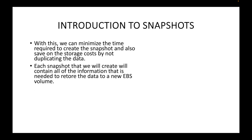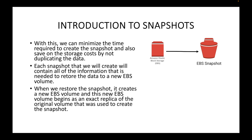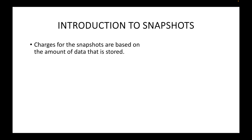Each snapshot you create will contain all of the information needed to restore the data to a new EBS volume. So if you want to restore a snapshot, you do that by creating a new EBS volume. When you restore an EBS snapshot, you're actually creating a new EBS volume, and this new volume will have all the data from the snapshot — an exact replica of the original volume.